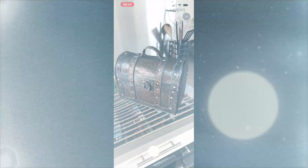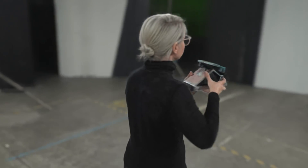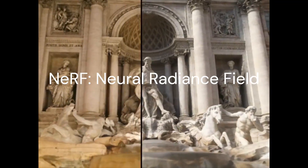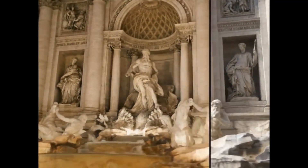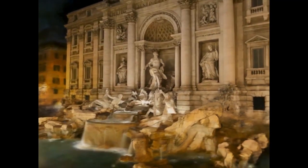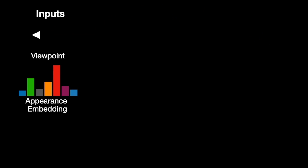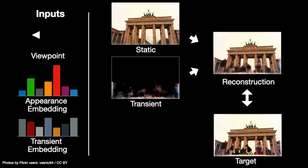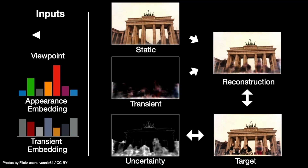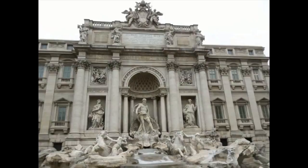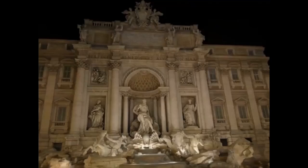Recently, a new technology appeared called NeRF — Neural Radiance Fields — and it made a ton of headlines. It's similar to photogrammetry because it's also a way to visualize a 3D scene or object using images as an input, but it differs from photogrammetry a lot.